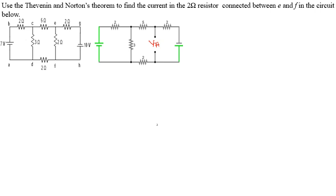After labeling VTH, I will now apply KVL. The current flowing through the first loop will be named I1, and the current delivered in the second loop will be named I2. We then apply KVL to this loop. Realizing that when I2 starts to flow and reaches the open circuit, no current enters the VTH branch. I2 also flows through the 5-ohm resistor. At the node, the sum of currents entering equals the sum leaving, so the current coming down is I1 plus I2.